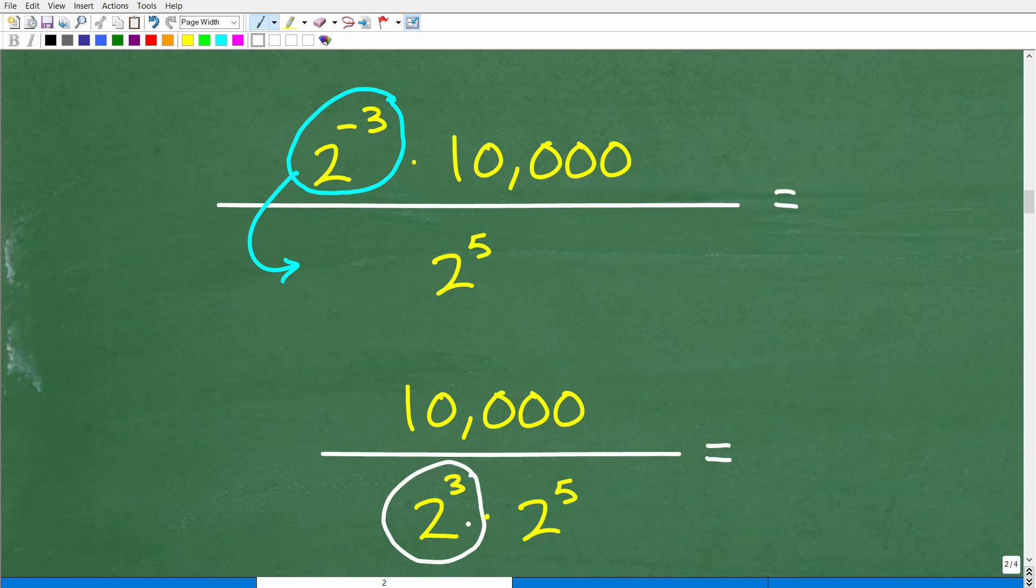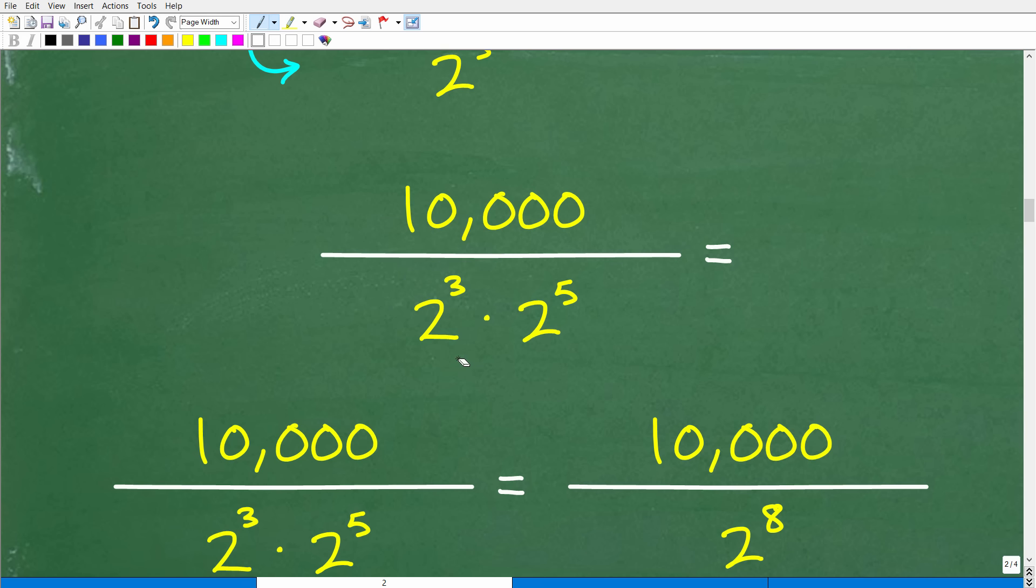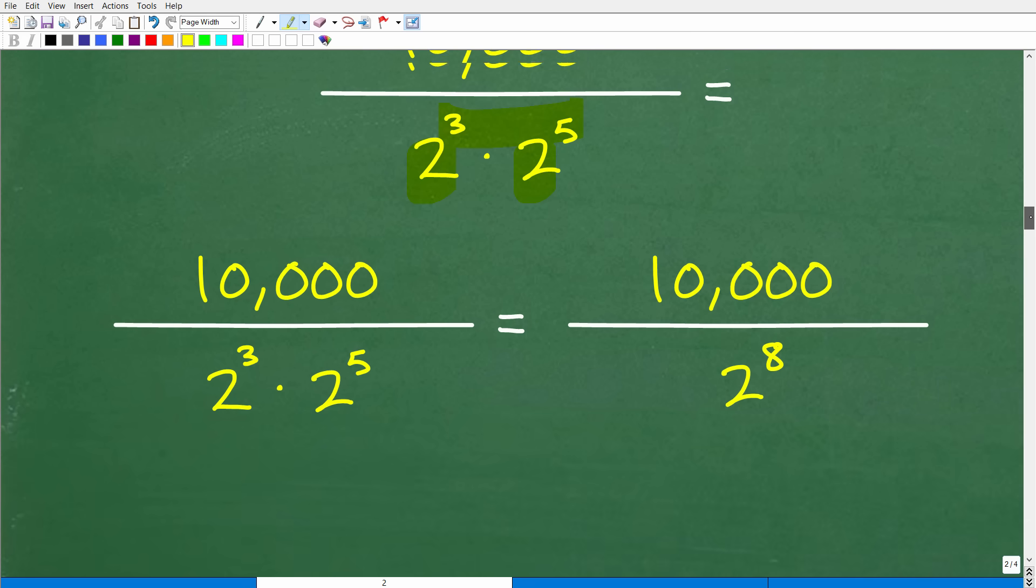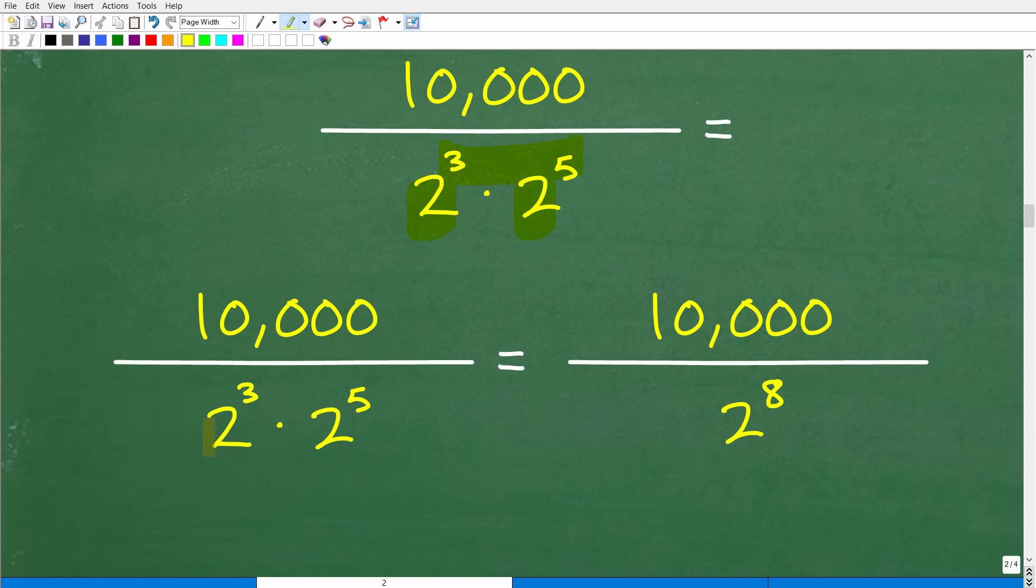All right. So we have 10,000 over 2 cubed times that 2 to the 5th power. All right. So now, same base, and we're talking about multiplication, so that's going to be pretty easy. And what do I need to do? I need to simply now add the exponents, right? So I have 2 to the 3rd power times 2 to the 5th power. So the final result is going to be what? 3 plus 5 is 8. So that's going to be 2 to the 8th. So we're getting pretty close here, right? So we have 10,000 over 2 to the 8th power, but I know that there's powers of 2 in here, right? It's pretty easy.